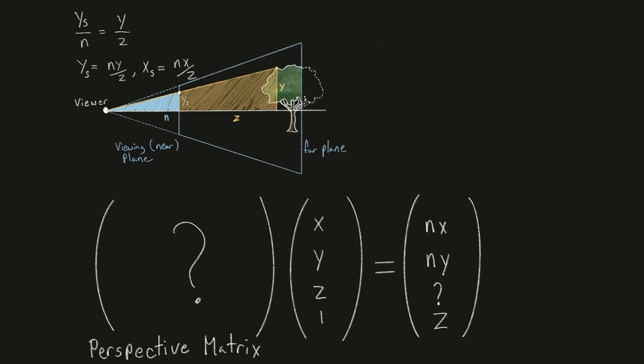With this knowledge, we can start to construct the perspective matrix transformation. The first two rows have the distance to the viewing plane on the main diagonal, and zeros elsewhere. This will have the effect of scaling the x and y components by the distance to the near plane. Next, the final row must be 0, 0, 1, 0, to take the z component from the input vector and move it to the w component of the solution vector.